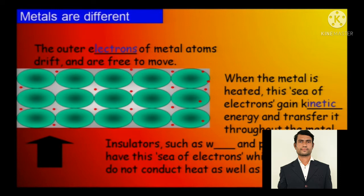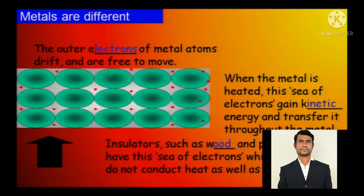Insulators such as wood and plastics have a sea of electrons as well, but the thing is they do not have that affinity — the electrons are most stable in insulators compared to metals. Metals have numerous amounts of electrons that are unstable, ready to bounce from one atom to another atom just after receiving the quanta.